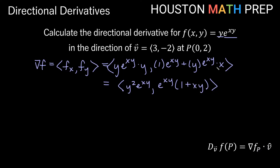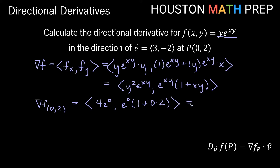Now we evaluate ∇f at the point p = (0, 2): plug in x = 0 everywhere and y = 2 everywhere. For the first component: 2² · e^(0·2) = 4 · e^0 = 4 · 1 = 4. For the second component: e^0 · (1 + 0·2) = 1 · 1 = 1. So ∇f evaluated at (0, 2) = (4, 1).